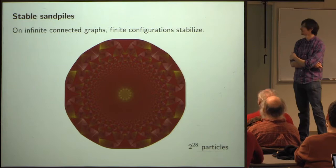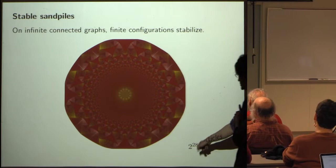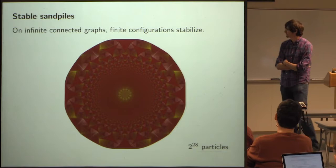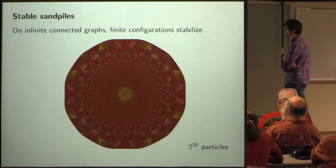We're seeing a great big piece of the plane now. It's proportional — the diameter is proportional to the square root of the number of chips. What's shown is always the stabilized configuration.